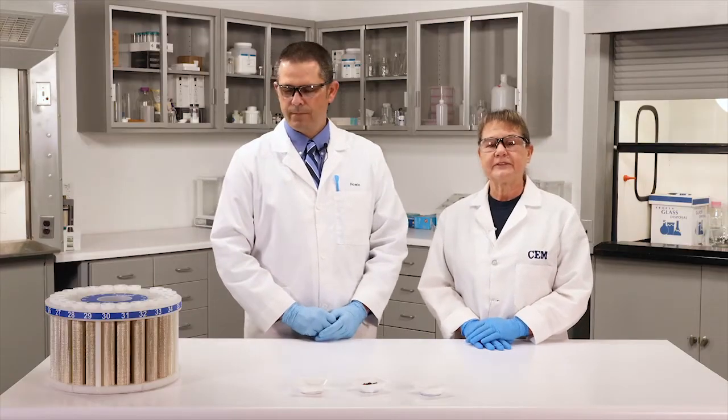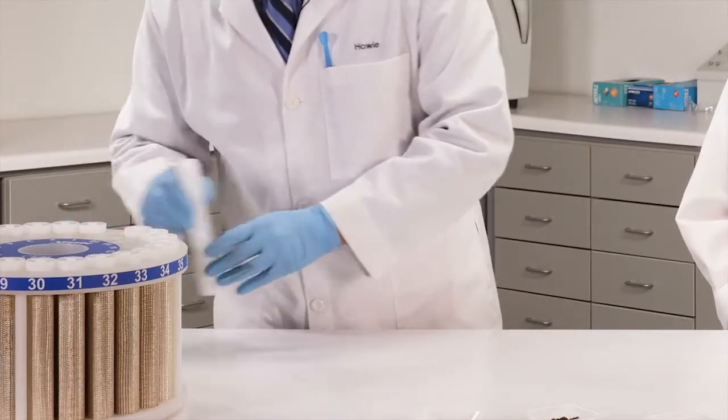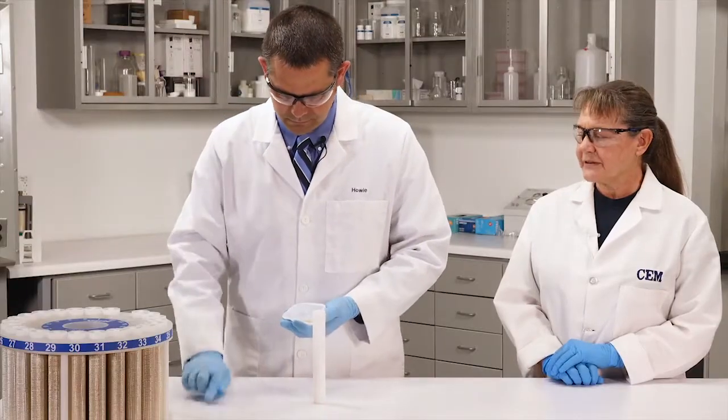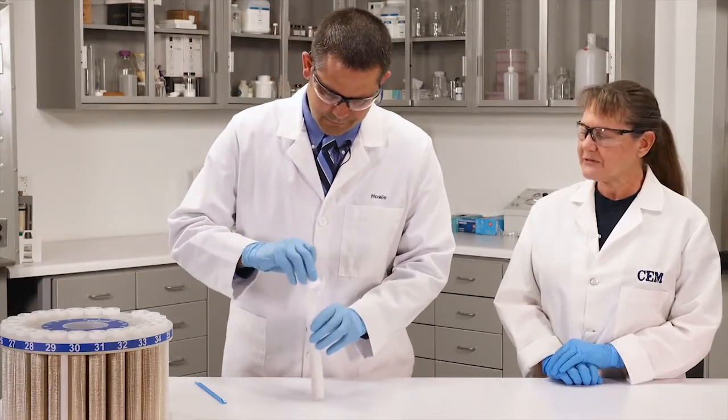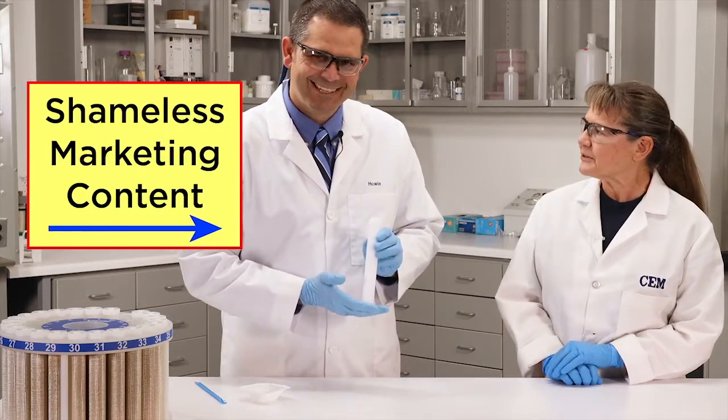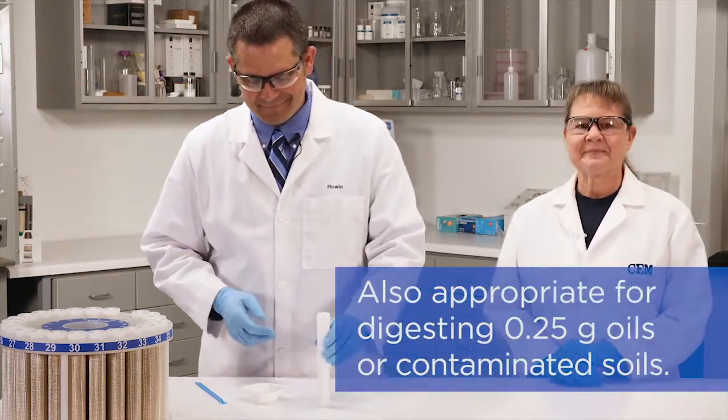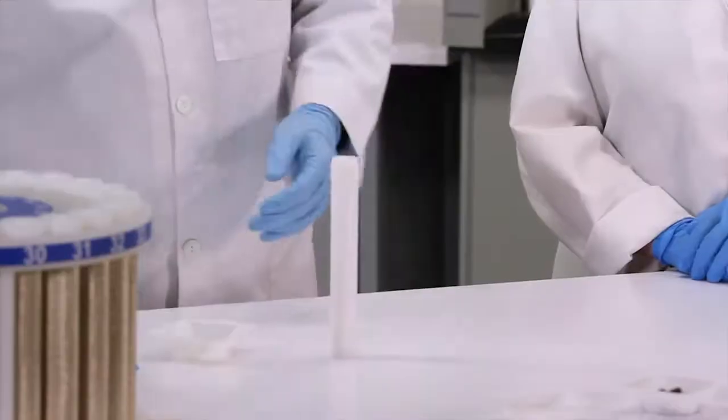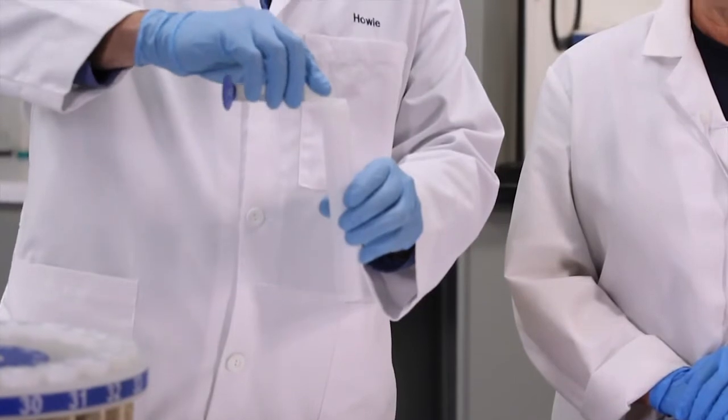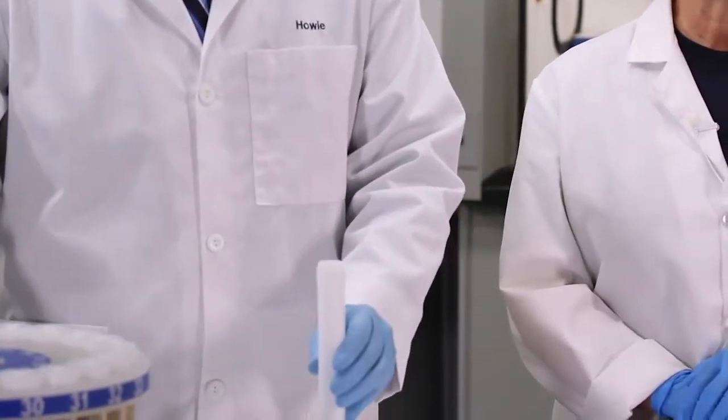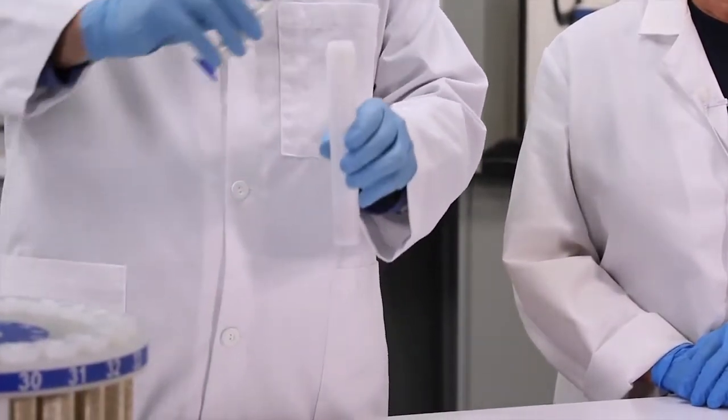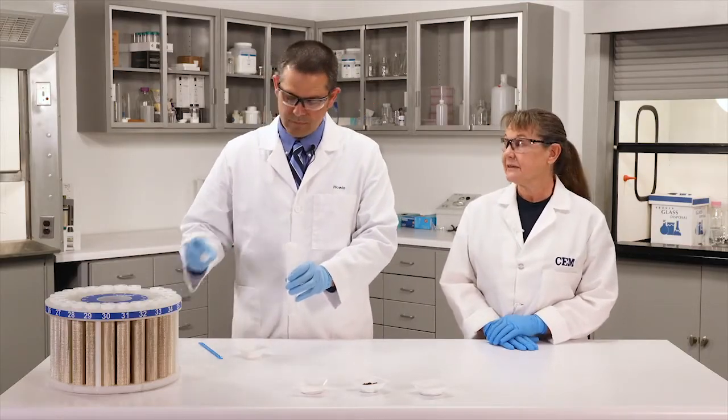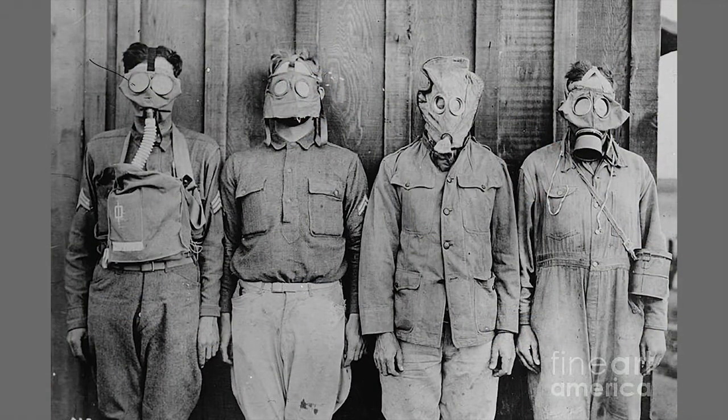So EPA 3051A goes like this: weigh a half a gram of well-mixed soil or sediment into your vessel. Oh I see that you're using a 55 ml express vessel Howie, did you know that that was the most popular vessel in the world for running this method? Once your soil is in the vessel, add 9 ml of concentrated nitric acid, and 3 ml of concentrated hydrochloric acid. Now this mixture is also referred to as reverse aquaregia. Just be sure not to pre-mix it because it'll generate strong chlorine gas and you'll clear the lab out for sure.